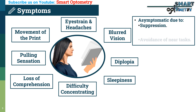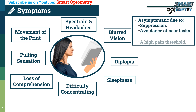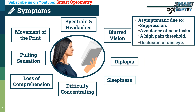Additional symptoms include a pulling sensation and movement of print. Some patients with convergence insufficiency are asymptomatic due to suppression, avoidance of near visual tasks, a high pain threshold, or occlusion of one eye when reading. As a practitioner, we must rule out these reasons why a patient with convergence insufficiency doesn't have any symptoms.